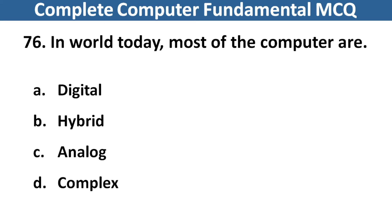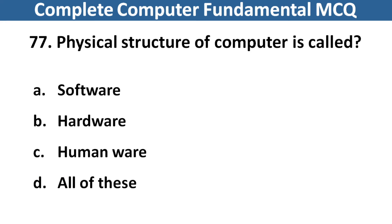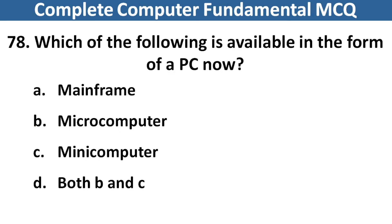In the world today most of the computers are? Right answer is option D, Complex. Next question: Physical structure of computers is called? Right answer is option B, Hardware. Next question: Which of the following is available in the form of a PC now? Right answer is option B, Microcomputer.